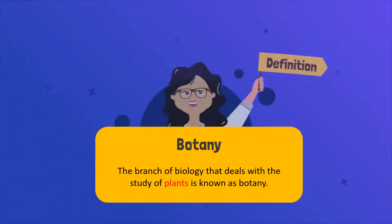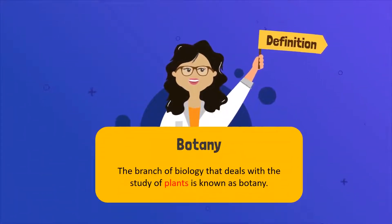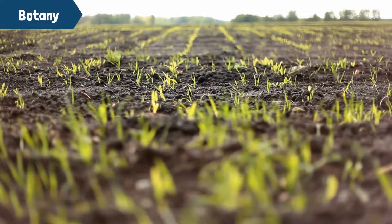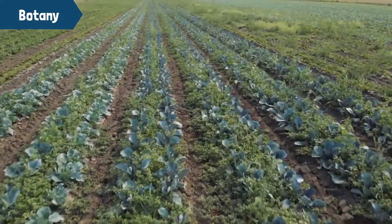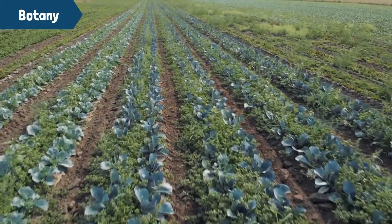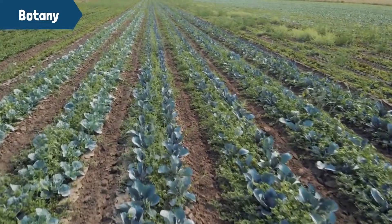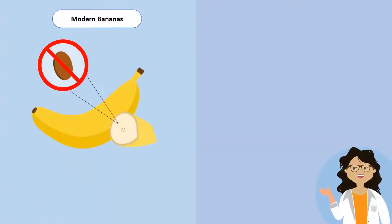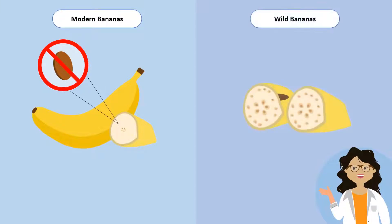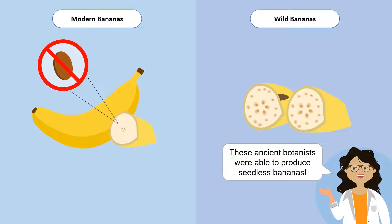The branch of biology that deals with the study of plants is known as botany. A botanist is a scientist who investigates the life and reproduction of plants. An important application of botany is improved crop cultivation. Did you know that the bananas you eat are seedless because of the efforts of ancient botanists? Wild bananas contain numerous seeds, but through careful selective breeding, these ancient botanists were able to produce seedless bananas.